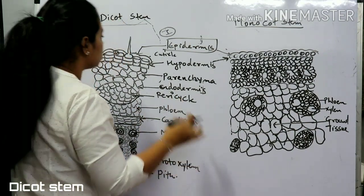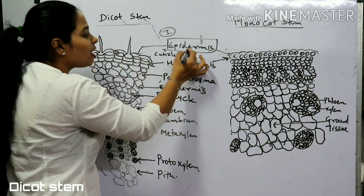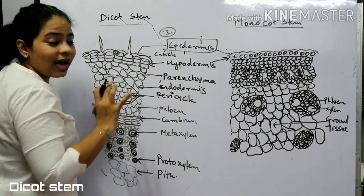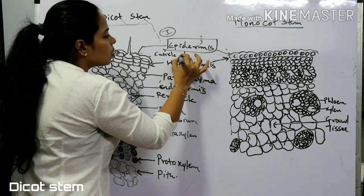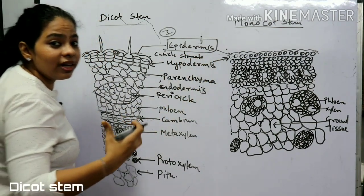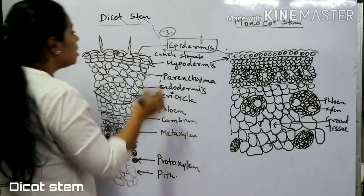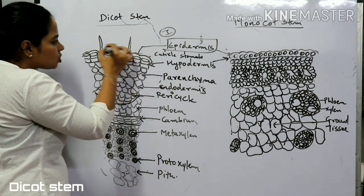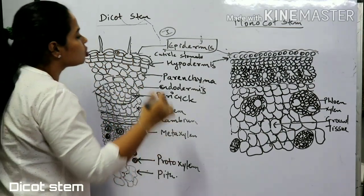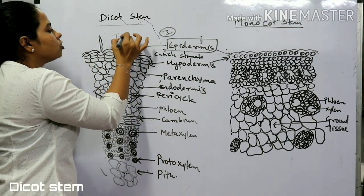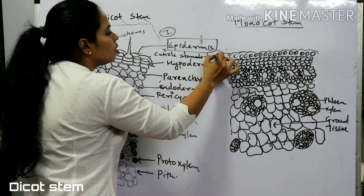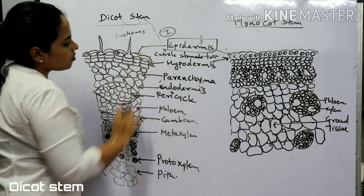The next part of the epidermis is stomata. In dicots, stomata are present in the epidermis and act as apertures that help in the exchange of gases. The third part of the epidermis is trichomes — the multicellular hair-like structures you can see here. So the epidermis has three parts: cuticle, stomata, and trichomes.